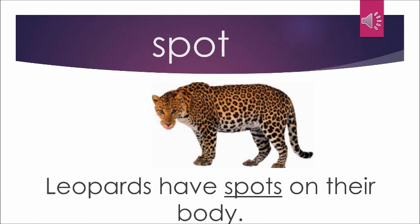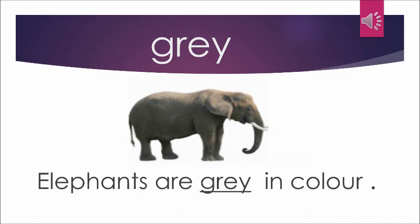Spot means small circles on the leopard's body — that is called spots. Leopards have spots on their body. Next word: grey. Grey is a colour. Can you see the elephant? It is grey in colour. So the sentence is: Elephants are grey in colour.